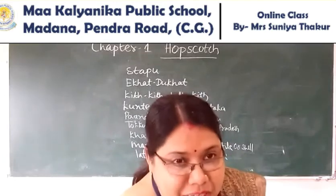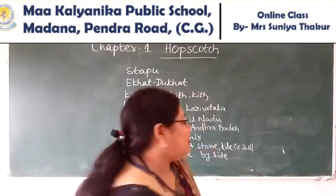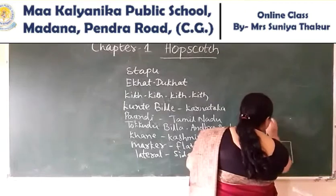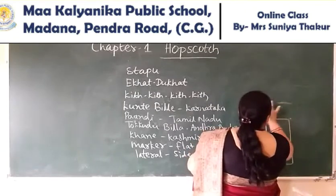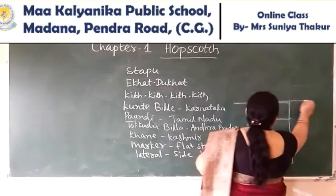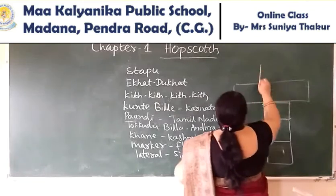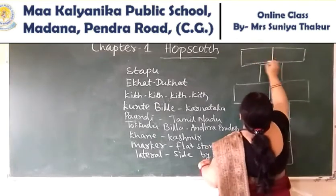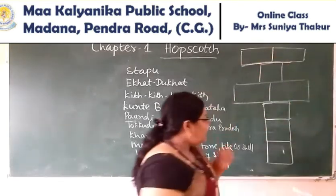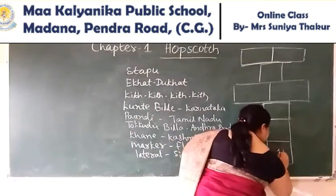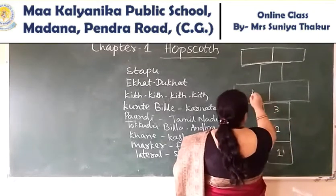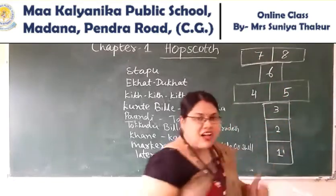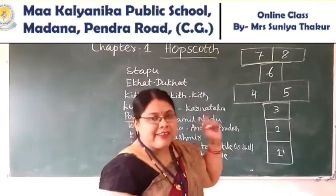What is hopscotch? I am telling you. To play this game you need 8 squares: 1, 2, 3, 4, 5, 6, 7, and 8. This is your hopscotch. We will point them out — 1, 2, 3, 4, 5, 6, 7 and 8. How many squares are in it? Yes — 8 squares you need to play.